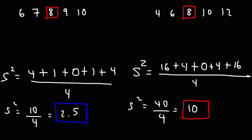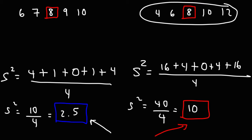As you can see, the variance for the data on the right is significantly higher than the variance for the data on the left. The reason is that the data on the right is more spread out from the mean, whereas the data on the left is more concentrated towards the mean. So variance is a measure of spread in the data — it tells you how far your data is spread from the mean. Hopefully this video gave you some good insight into how to calculate variance and what it means and represents.